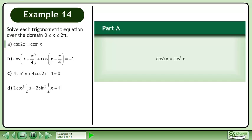Solve each trigonometric equation over the domain where x is between 0 and 2π. In Part A, solve cos2x equals cos²x.